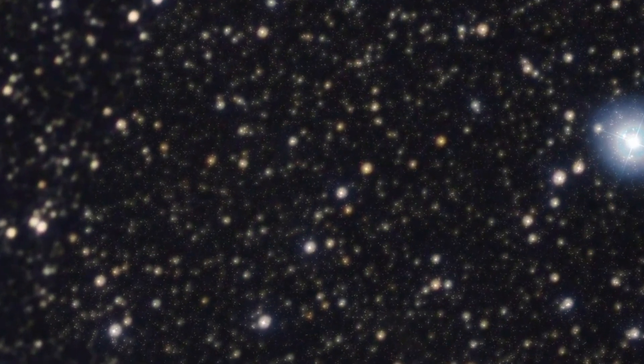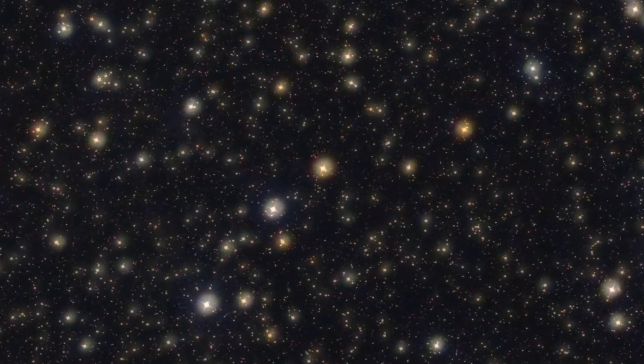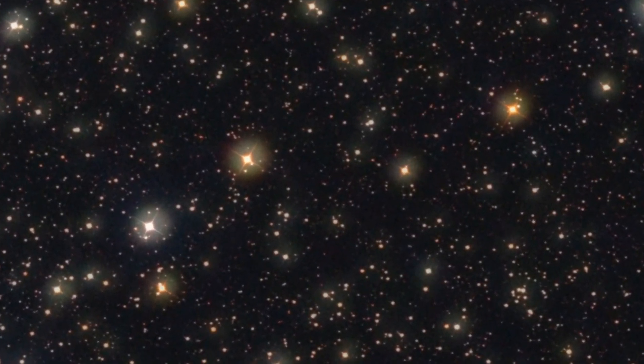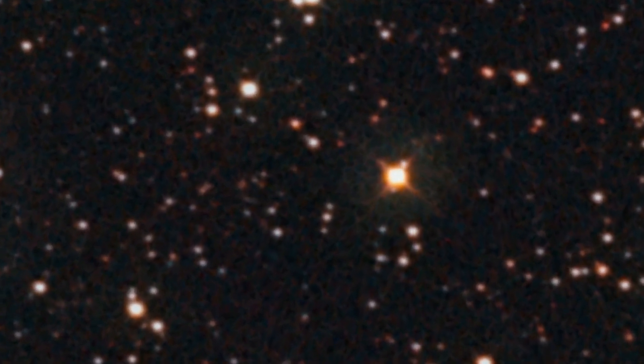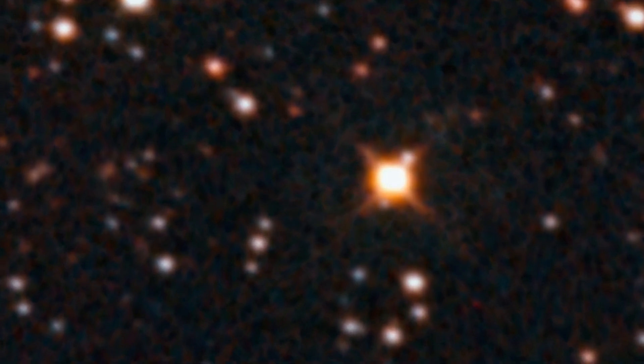PDS-70 is located in the constellation of Centaurus at around 370 light years away from our planet. It's a very young star, approximately 0.76 masses of the Sun, with the current age estimate being about 5.6 million years old. This means that this is not actually technically a star yet. This is not a main sequence star. It does not burn hydrogen to produce energy just yet.